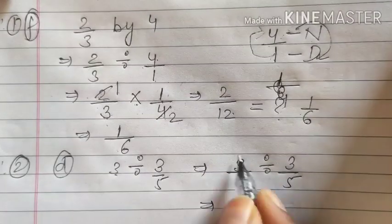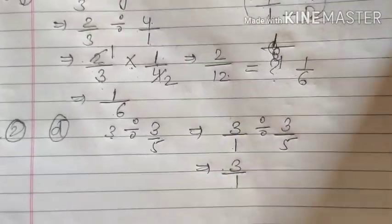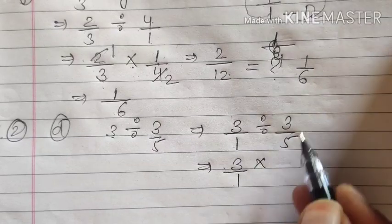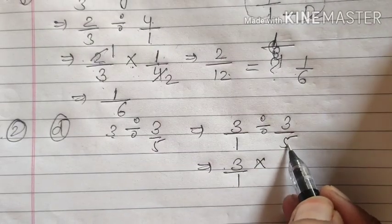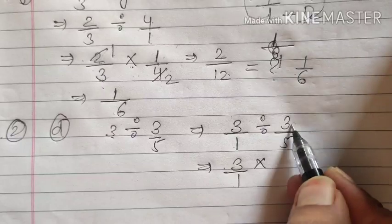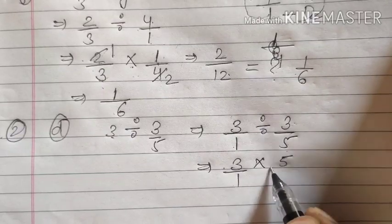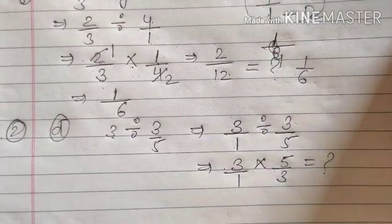Divided 3 by 5. Now, to solve this, left hand side number will be as it is. Divide will be converting into multiplication. And here we have to write down reciprocal of this number. If it is 3 upon 5, then here we will write 5 upon 3. And now you will solve it by yourself.